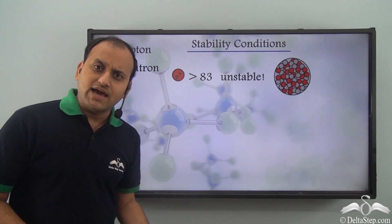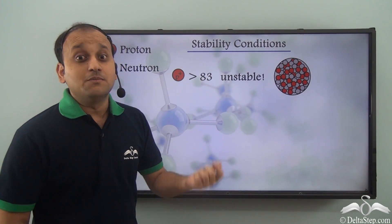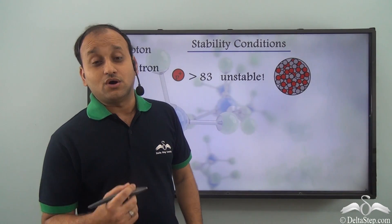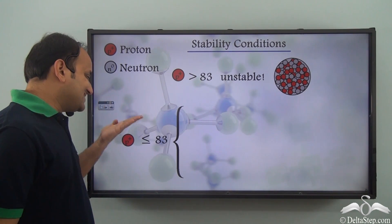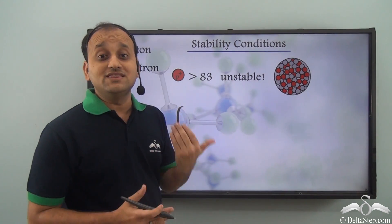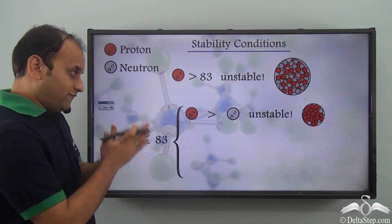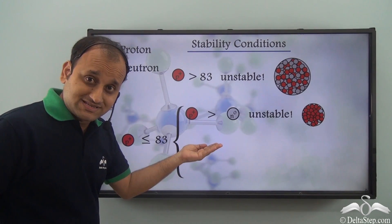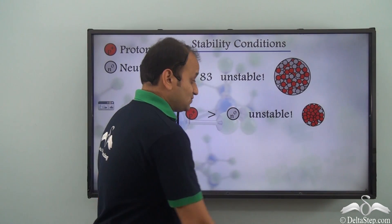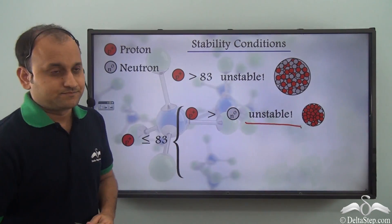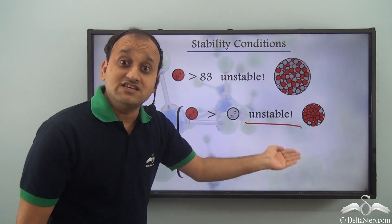But does that mean all nuclei with atomic number lower than 83 are stable? Well, usually they are, but even there there are certain exceptions. Even when the number of protons is less than or equal to 83, there can still be instability in the nucleus. The first such condition is if the number of protons is larger than the number of neutrons — in this case the nucleus will always be unstable.